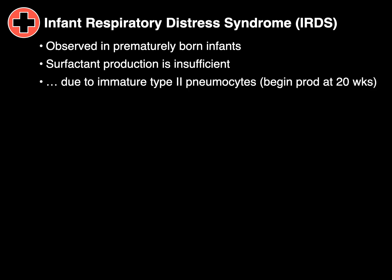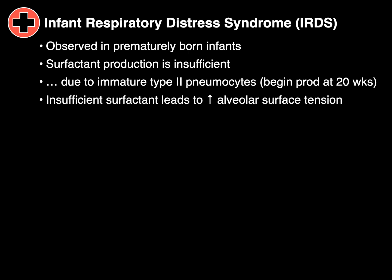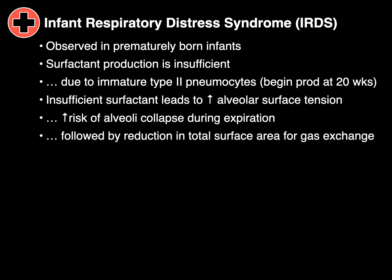Infant respiratory distress syndrome, or IRDS, is observed in prematurely born infants where surfactant production is insufficient due to immature type 2 pneumocytes, which start making surfactant around 20 weeks after fertilization. Insufficient surfactant leads to increased alveolar surface tension, increasing the risk of alveoli collapsing during expiration, followed by a reduction in total surface area for gas exchange, and hypoxia and hypocapnia develop.